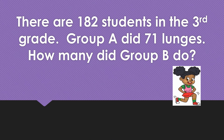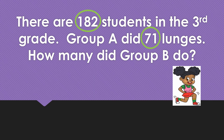While I read this story problem to you, go ahead and do standing lunges. You lunge with your right foot, stand up, lunge with your left foot, and then stand up. There are 182 students in the third grade. Group A did 71 lunges. How many did Group B do? I'm going to circle my important numbers and underline my important words. In this problem, there's not really a word that stands out, but I will notice that Group A did lunges but Group B has not — so we have to figure out how many Group B did. That would be subtraction. Pause the video, answer your problem, and then resume the video.